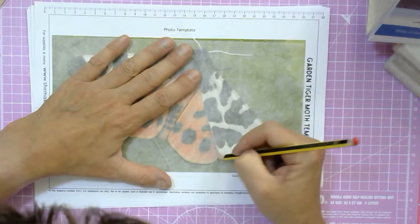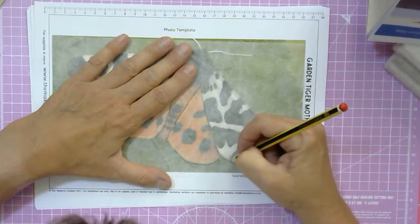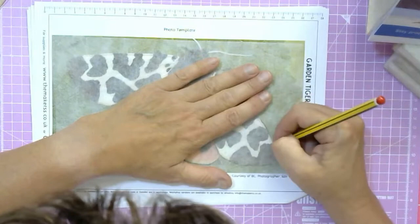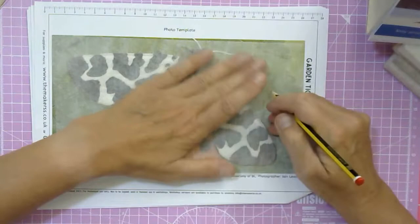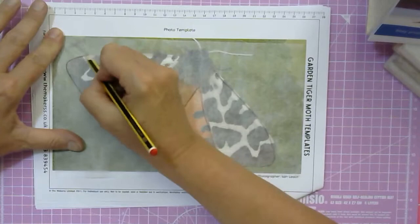This picture has kindly been provided by the Butterfly Conservation, and it was taken by photographer Ian Leach. He has taken this photo of this beautiful garden tiger moth that you can find in British gardens.